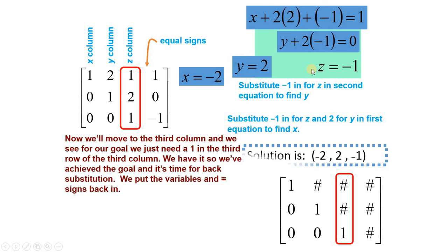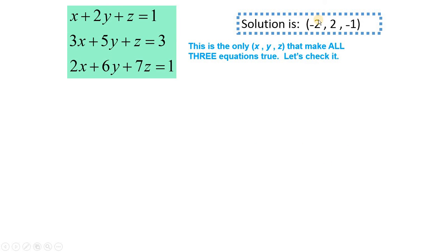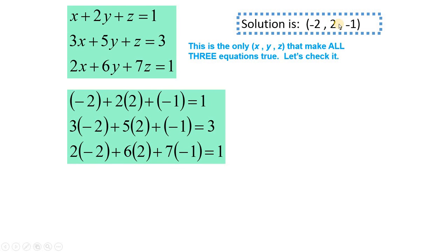تو x, y, z ہمیں ملے — this is the solution set of the given system of equations. This is the only x, y, z that makes all the equations true. ان تین values کو جب ہم یہاں پہ put کرتے ہیں تو یہ equations satisfy کرتے ہیں — لہذا this is the correct answer.